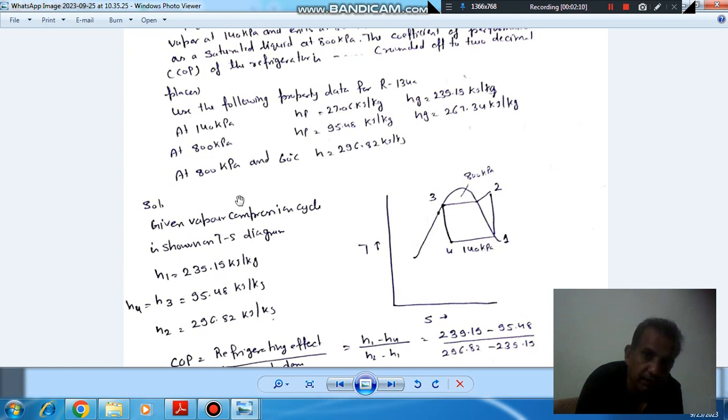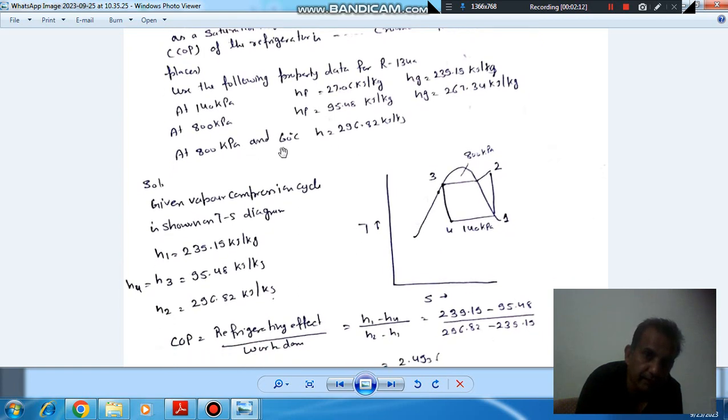At 800 kPa and 60 degrees Celsius, looking at the superheat property tables, we find h2. At this exit condition of 800 kPa and 60°C, h2 equals approximately 296.82 kJ/kg.